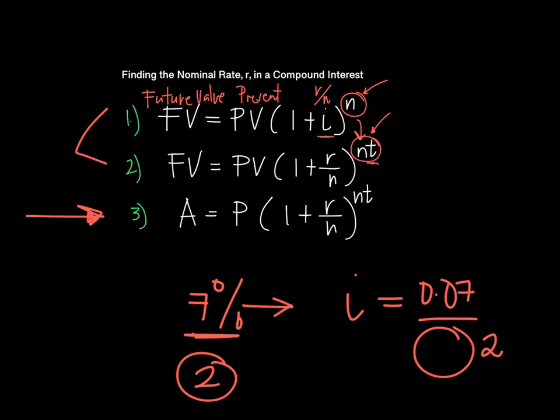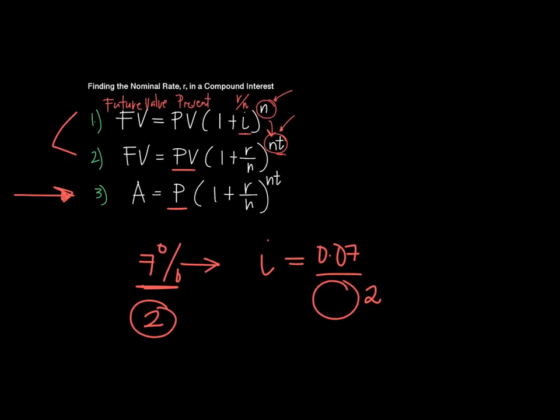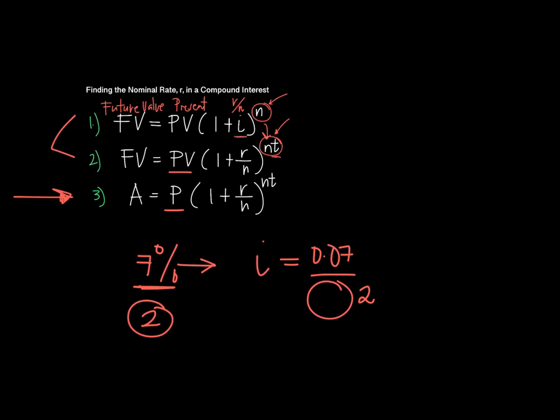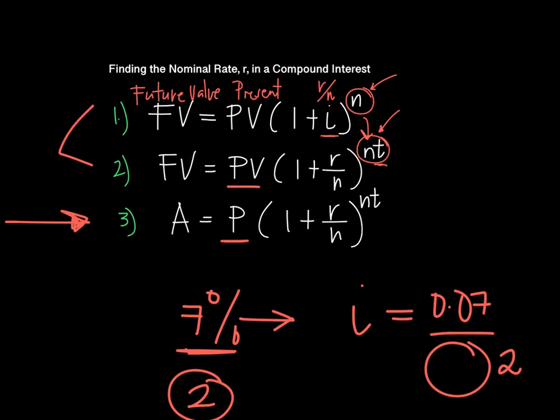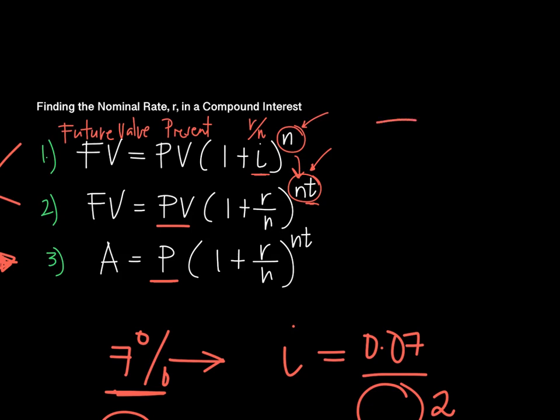These two formulas are based on the basic formula for compound interest: A equals P, which is the PV, times 1 plus R over N raised to NT. The goal of this video is to show you how to find the value of R.